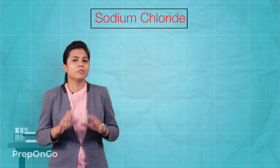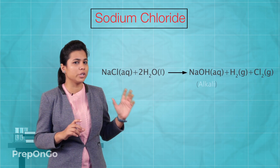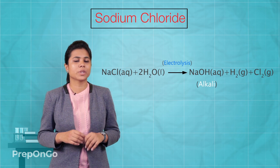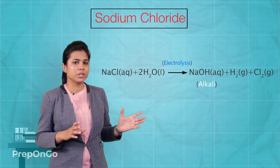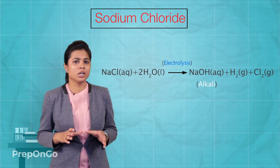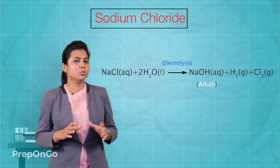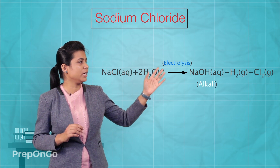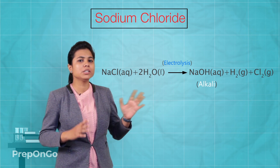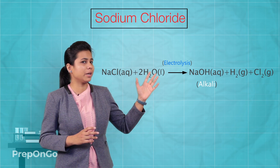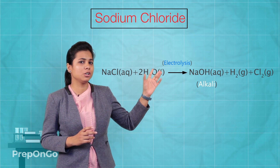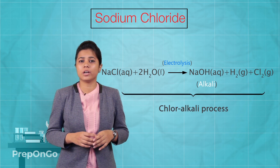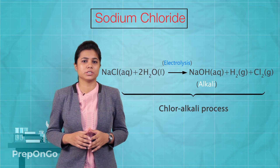To do this, we make a solution of sodium chloride and pass electricity through it. There will be a decomposition reaction which separates the sodium chloride into sodium hydroxide, hydrogen, and chlorine. Among the products, sodium hydroxide, which is an alkali, and chlorine are formed — so this process is also called the chloralkali process.